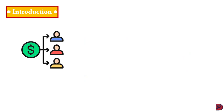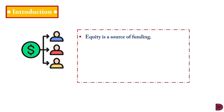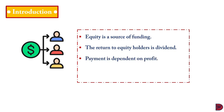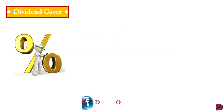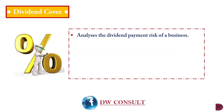Dividend cover: equity is one of the sources of funding when an individual or entity invests in equity of another business. The expected return comes in the form of dividend. The dividend is paid dependent on profits, unlike debts which must be paid irrespective of whether profit is generated or not. Dividend is the last payout — payment to debt holders takes precedence over dividend payment, which is the return to equity holders.